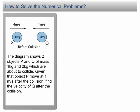Let's look at this example. The diagram shows two objects, P and Q, of mass 1 kg and 2 kg which are about to collide. Given that object P moves at 1 m per second after the collision, find the velocity of Q after the collision.